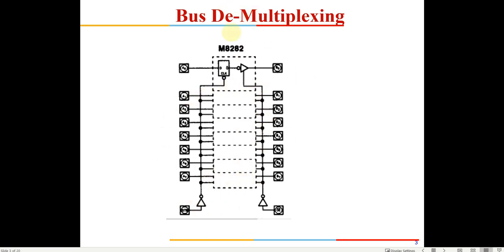There are eight such D flip-flops and eight such buffers. Whenever the latch enable signal goes high, all eight signals will be latched, and this terminal needs to be permanently grounded. There will be three such parallel ICs because we require 20 address lines and one BHE line — a total of 21 lines — so a minimum of three ICs is required.